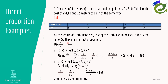For direct proportion, x/y = k, so x₁/y₁ = x₂/y₂. Taking x as length of cloth and y as cost: x₁ = 5 meters, y₁ = 210 rupees. To find the cost for 2 meters, x₂ = 2, and cross-multiplying: y₂ = (2 × 210) / 5 = 84 rupees.